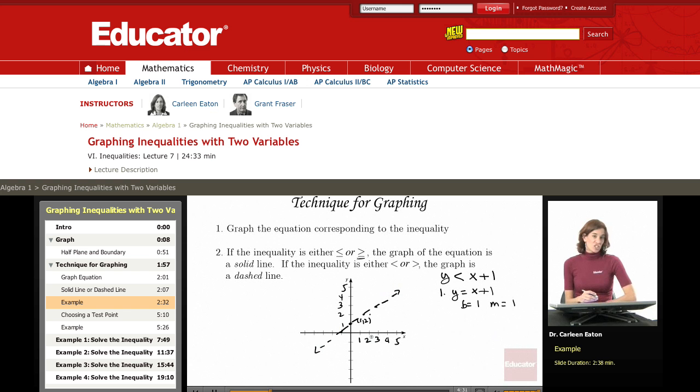What this dashed line is telling me is that the points on the line are not part of the solution set. If I had a solid line, for example, if I had y is less than or equal to 2x plus 3, then when I found my corresponding equation, I would graph it using a solid line.